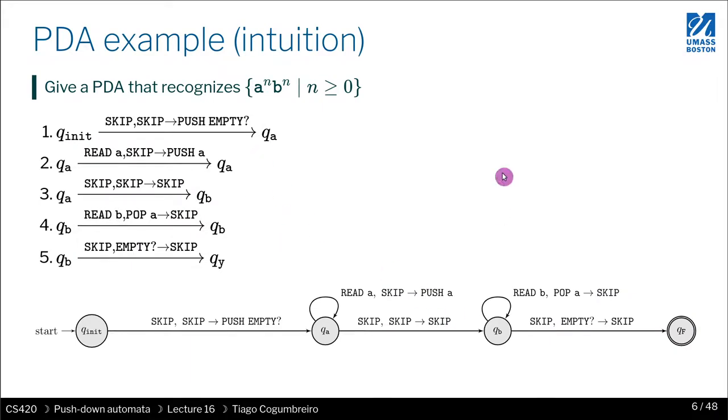So let's see an example. One language that we studied when we studied non-regular languages was A^n B^n, where n is a positive number or zero. So this, as we know, it's not possible to be represented using an automaton, a DFA nor an NFA. And it's also not possible to give a regular expression that recognizes it. It is possible to do with a grammar as we already looked at. So now we're going to see how we could do it using a PDA.